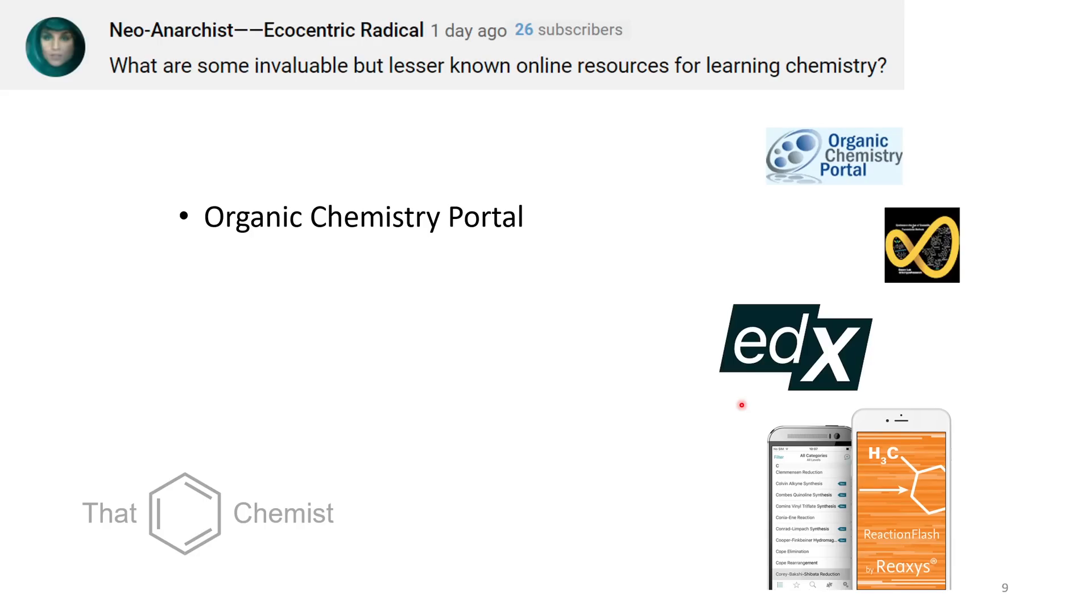What are some invaluable but lesser known online resources for learning chemistry? So for me, I would say some of the main ones would be like Organic Chemistry Portal. They have a lot of different useful reactions. There's a lot of information on there that's really useful. Another really good one is Phil Barron's YouTube Heterocycle course. He has a newer version from 2021 that's on there, but the 2019 version was quite good in my experience as well.